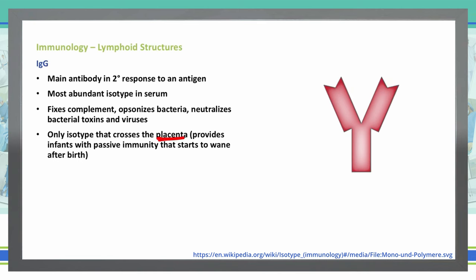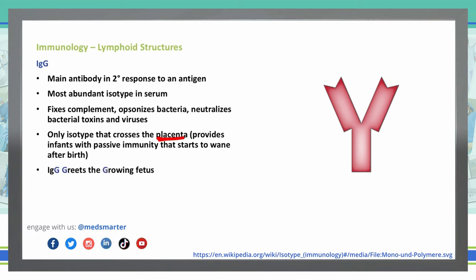You can get confused here: IgA goes through breast milk into babies; however, crossing the placenta is only going to be IgG. We can remember that IgG greets the growing fetus, because that's the one crossing the placenta.